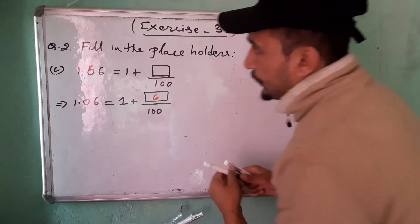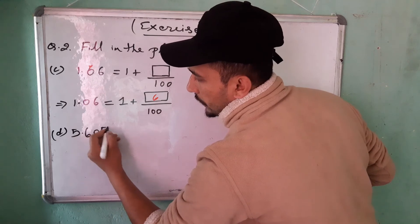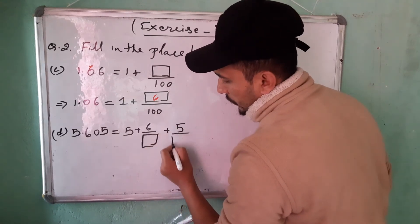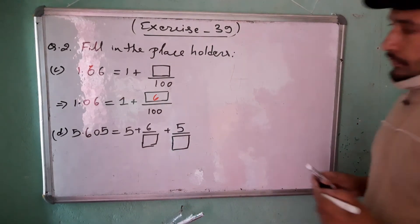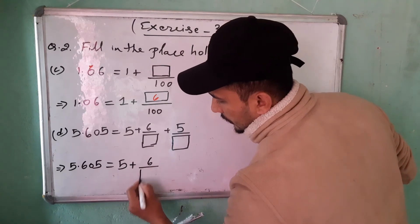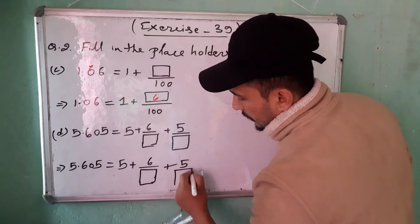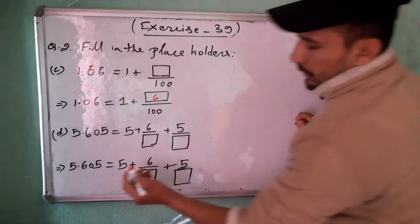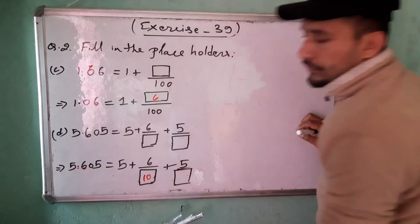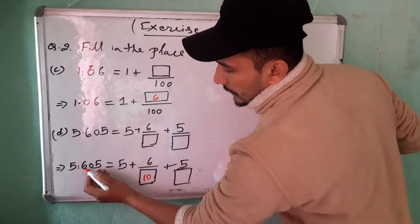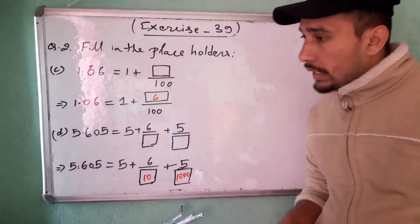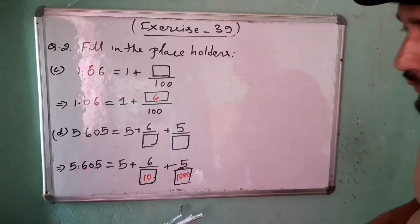Number D is 5.605 equals 5 plus 6 divided by (box) plus 5 divided by (box). Find the place value of 6: the decimal point is in units place, so 6 is in tens place — put 10. Find the place value of 5: units, tens, hundreds, thousands — 5 is in thousands place, so put 1000. Question number 2 is now completed.